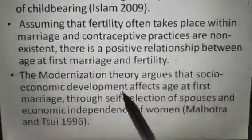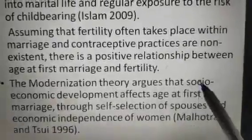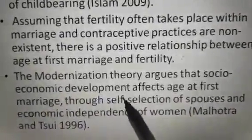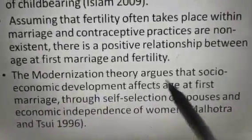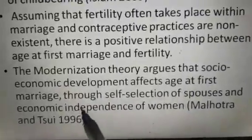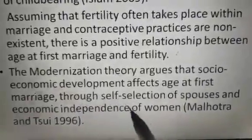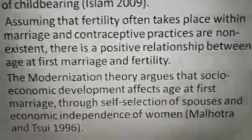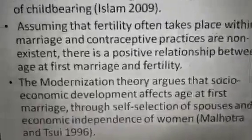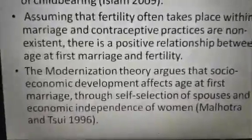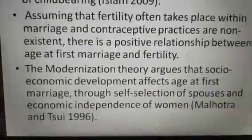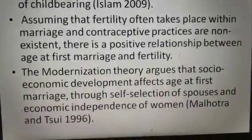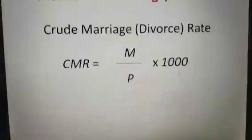The modernization theory argues that socio-economic development affects age at first marriage through self-selection of spouse and economic independence of women. This is the argument made by modernization theorists.